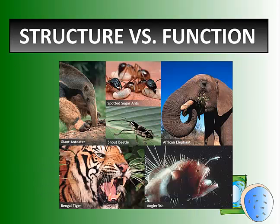Take a look at this next photo. There's a collection here: a giant anteater, an African elephant, an anglerfish, and a Bengal tiger. In every one of these images you see a mouth — a feeding structure. The anteater uses the same structure for gathering and eating food, while the elephant gathers food with its trunk but eats with its mouth. Different structures, similar functions.